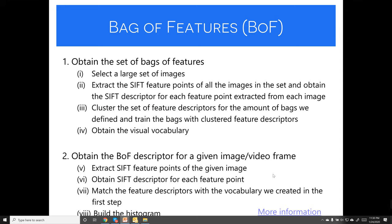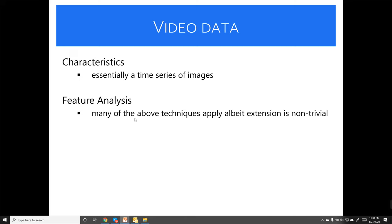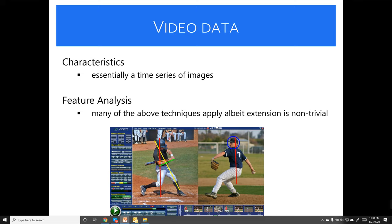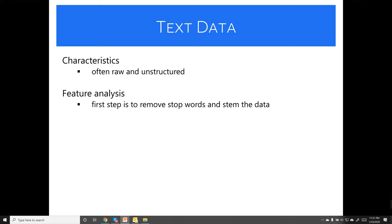Video data is essentially a time series of images, so you can apply similar techniques extended into the time domain. Text data, on the other hand, is often unstructured and requires its own feature analysis pipeline.